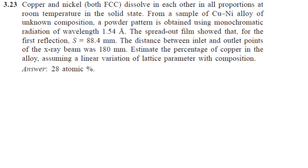Hello guys, welcome to our channel. There was a recent doubt asked by some students, so I want to clarify it. The question: copper and nickel, both FCC, dissolve in each other in all proportions at room temperature. From a sample of copper-nickel alloy of unknown composition, a powder pattern is obtained using monochromatic radiation of wavelength 1.54 Å. The spread-out film shows that for the first reflection, s = 88.4 mm. The distance between inlet and outlet points of the x-ray beam was 180 mm. Estimate the percentage of copper in the alloy, assuming a linear variation of lattice parameter with composition.